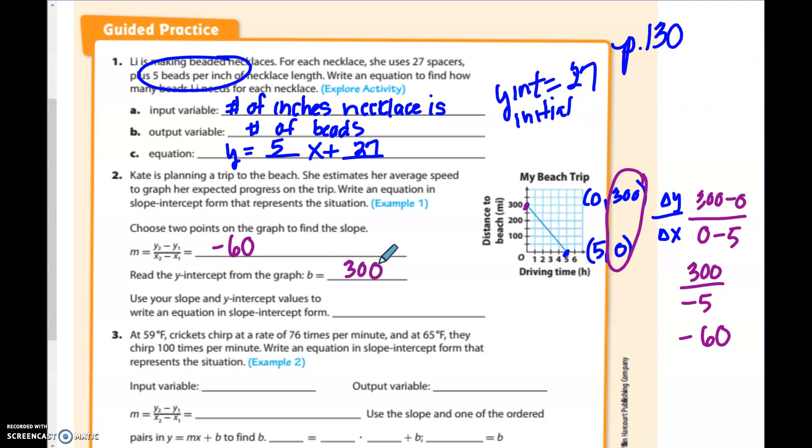And I'm going to divide by negative 5. So 300 divided by negative 5 is negative 60. So that's what goes in here in this first blank is negative 60. So now it says read the Y-intercept from the graph. So the Y-intercept is going to be where does this line cross the Y-axis? And it's right here at 300. So now I have my slope and my Y-intercept, and I can write my equation.